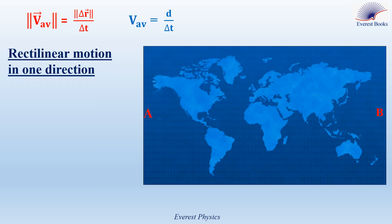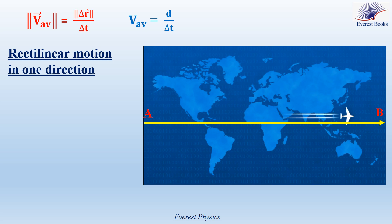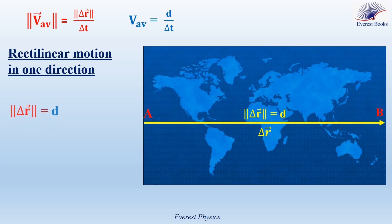But is this result always valid for all types of motion? We have seen that the magnitude of the average velocity is not equal to the average speed for a curvilinear motion. Is this result valid for a rectilinear motion in one direction? As you see, the plane moves from point A to point B on a straight path. The displacement vector between A and B is delta R. In this case, the magnitude of the displacement vector is equal to the travel distance D. Since the magnitude of the displacement vector equals the actual distance and delta T is the same in both formulas, the magnitude of the average velocity vector equals the average speed in rectilinear motion in one direction.